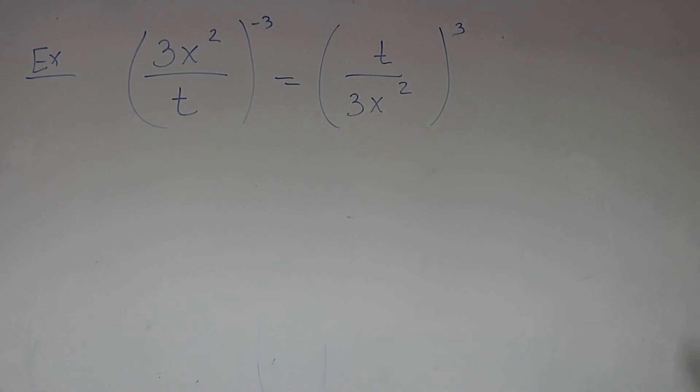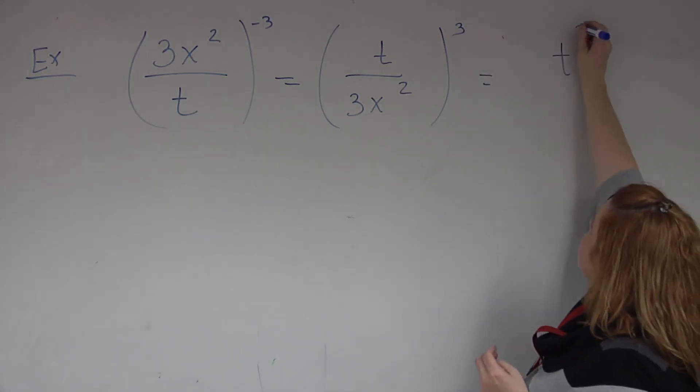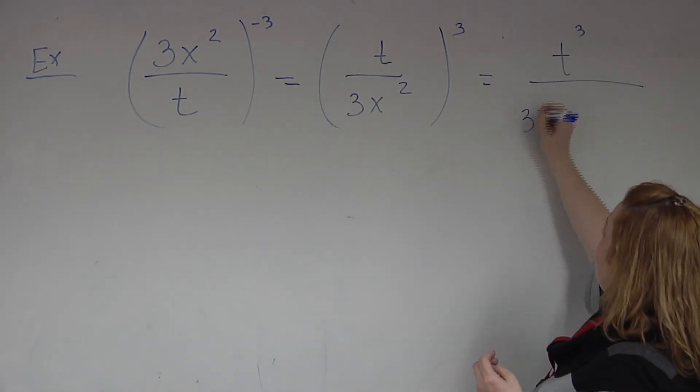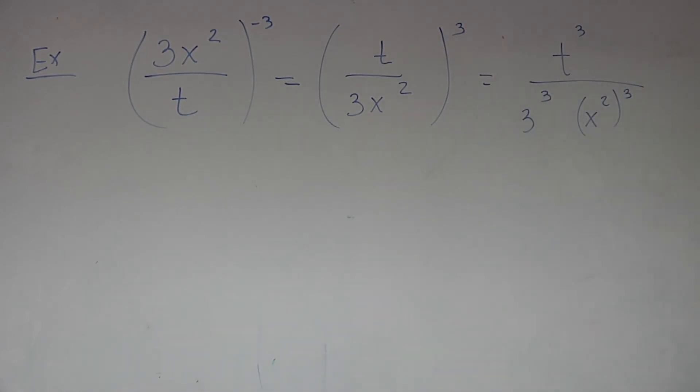Then I'm going to use my quotient rule and bring that power of 3 to everything. How many items do you see inside that parentheses? You got the t, you got the 3, you got the x squared. The x squared is attached together. So that 3 is going to go to the t, it's going to go to the 3, and it's going to go to the x squared. It's going to go to every single item.